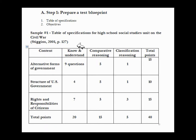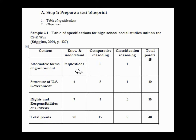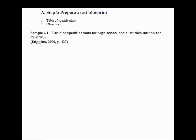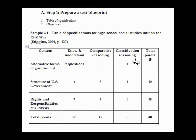For example, if we wanted to do a test for a high school social studies unit on the Civil War, we might address alternative forms of government at the knowledge level, the comparative reasoning level, or the classification reasoning level. Within each of these cells, you have the number of questions you want — for instance, nine questions on alternative forms of government at the knowledge level, and only one question for classification reasoning on that same topic.